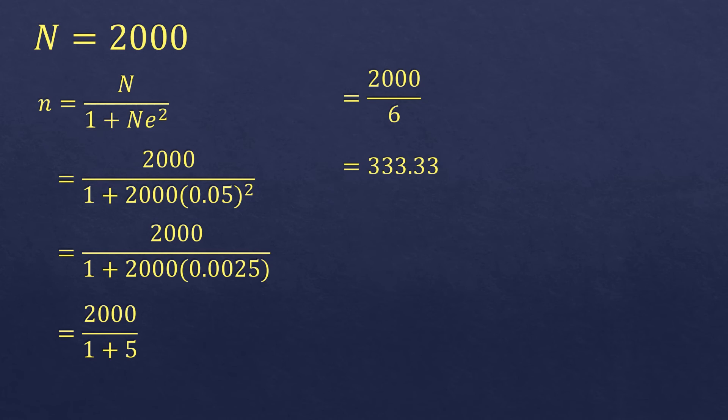Again, if we have a decimal, we always round up. So it will be 334. That is the minimum sample size. So it's okay to be 335, 336, 337, as long as it's more than or equal to 334. That will be valid.